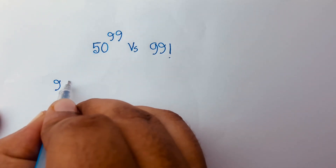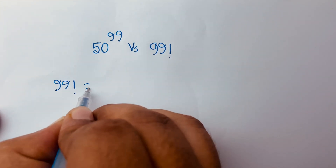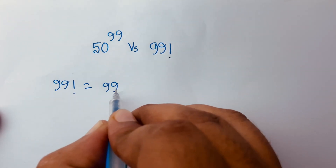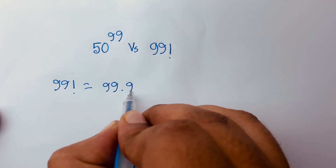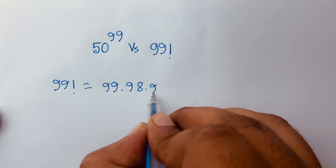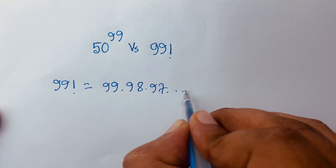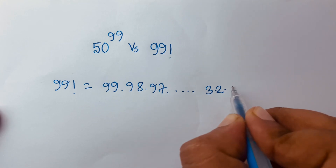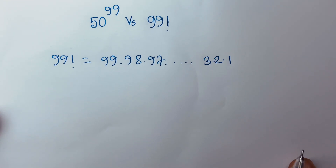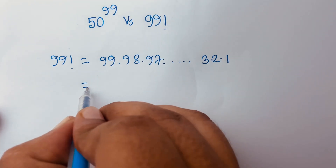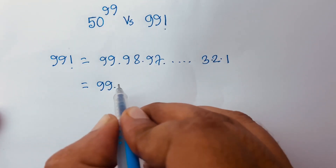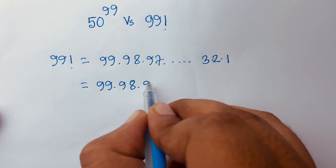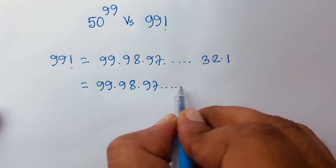99 factorial is equal to 99 times 98 times 97 times dot dot dot 3 times 2 times 1.